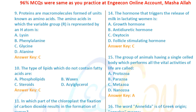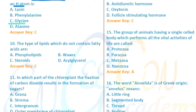The amino acid in which the variable R group is represented by H — that amino acid has its R group replaced by hydrogen in the simplest form. Option C, glycine, is ticked as the answer.